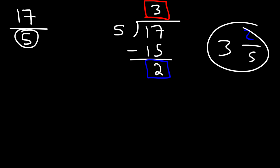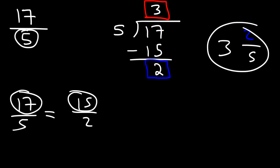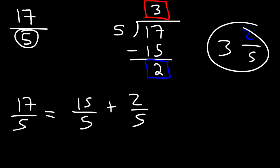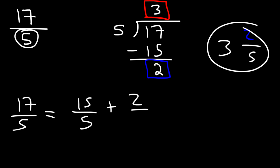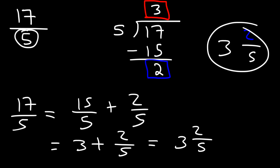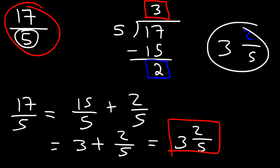Another way to convert an improper fraction to a mixed number is to split the fraction. The highest multiple of five just under seventeen is fifteen. Split seventeen over five into fifteen over five plus two over five. Fifteen divided by five is three, so three plus two-fifths gives you the same mixed number: three and two-fifths.